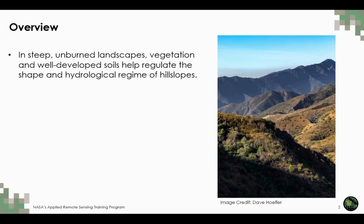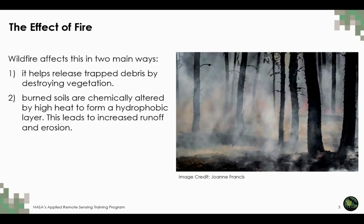Wildfire ultimately affects these landscapes in dramatic ways. First, when you destroy the vegetation, you remove the roots that hold steep hill slopes in place — on yearly to several-year timescales. More immediately, when you take away the vegetation, you're essentially removing that dam. All the sediment that was trapped behind these plants is now much easier to mobilize, more freely exposed to rainfall, and easier to move.